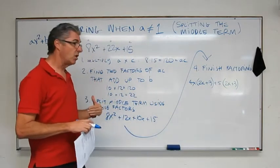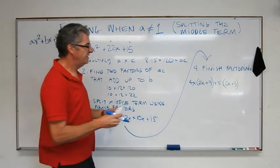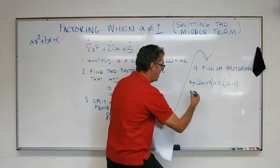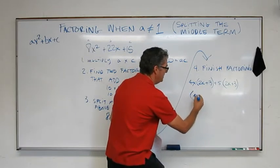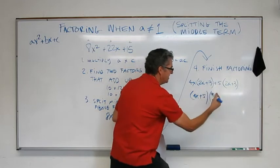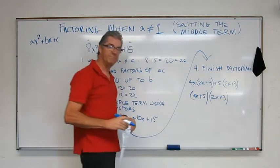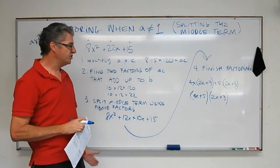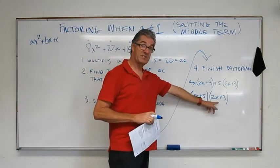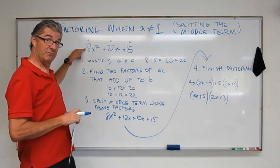These two should be the same. Otherwise, you made a mistake somewhere, or it's not factorable. But right now, they are the same, so I take these guys and bring them down. 4x plus 5, and then 2x plus 3 goes right there. And we're done. Now, if you have the time and you want to check, you can FOIL this expression, and you should wind up all the way back here. Okay?